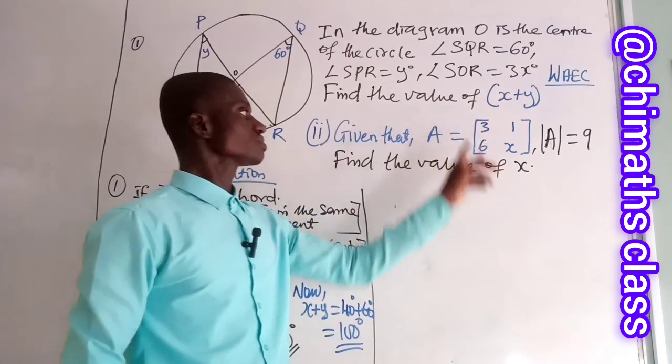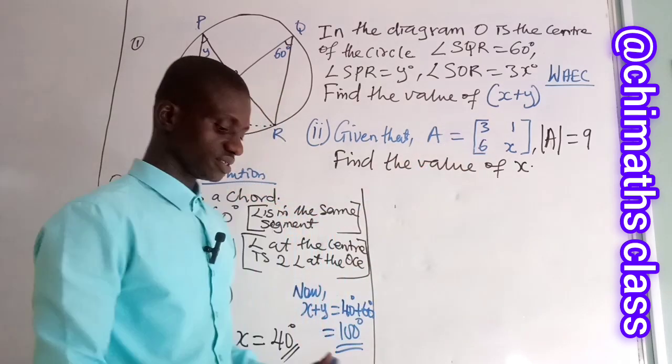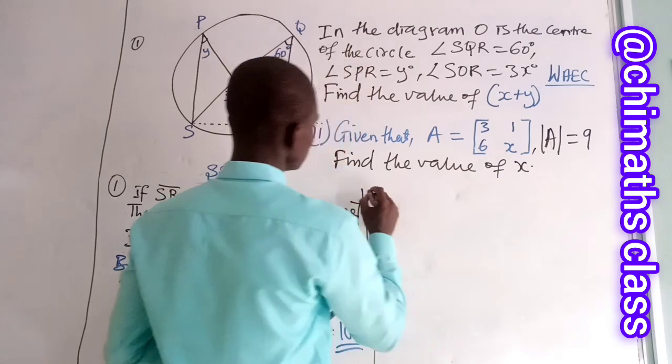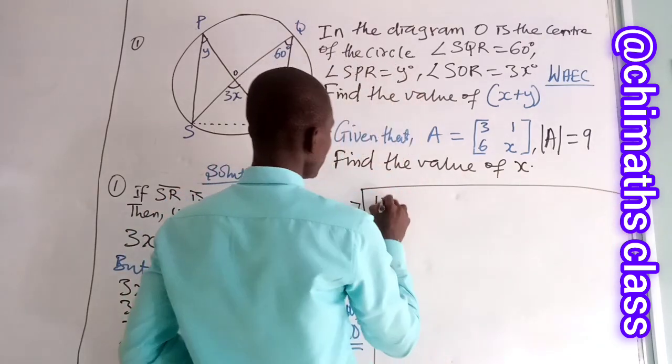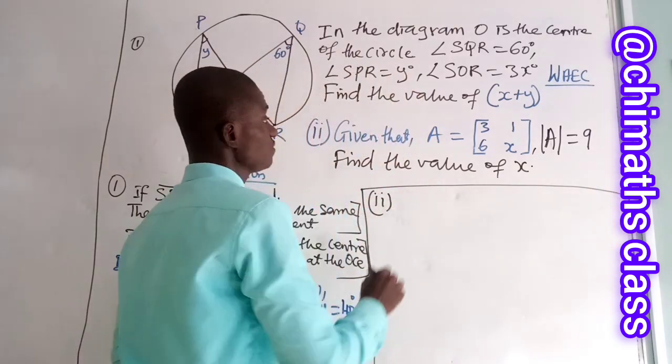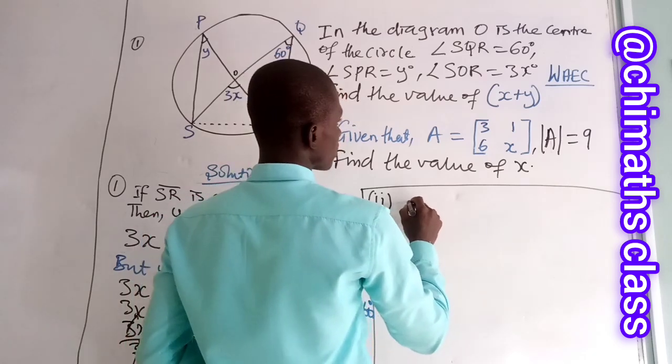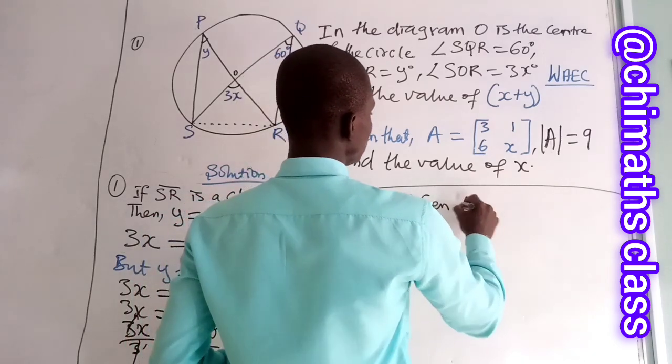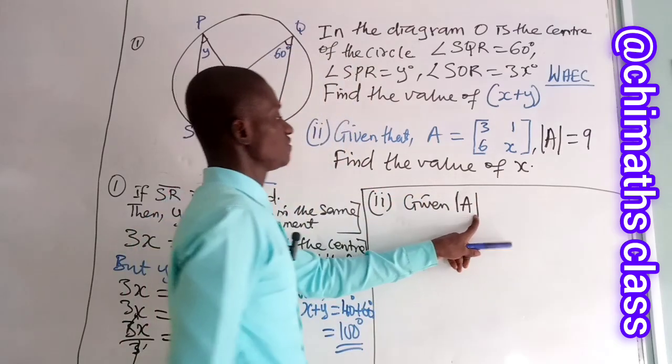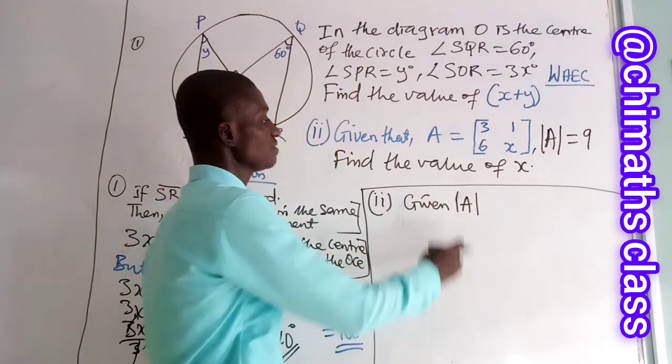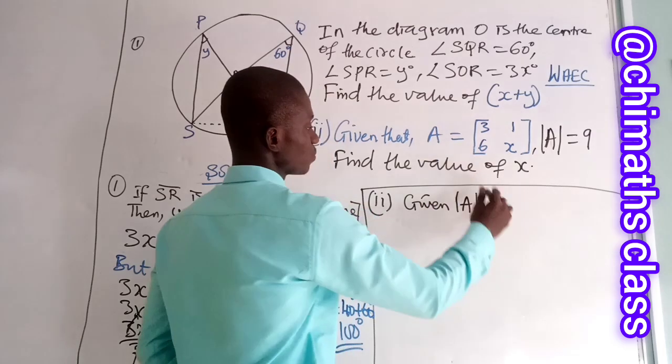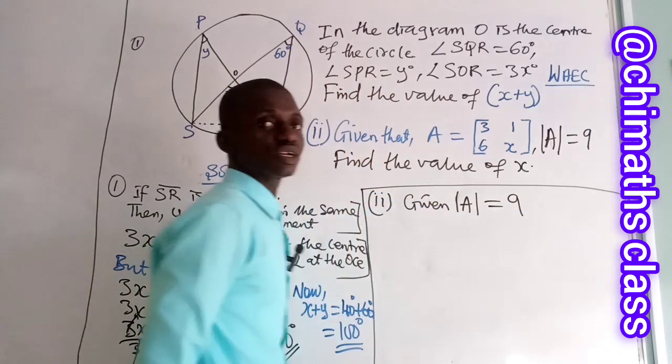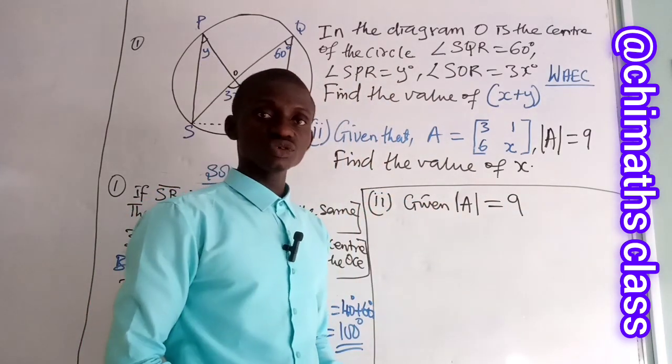Now let's solve the second problem, which is number two. We are given that the determinant of this matrix is 9. Remember that the determinant for 2 by 2 matrix, this is 2 by 2 matrix.